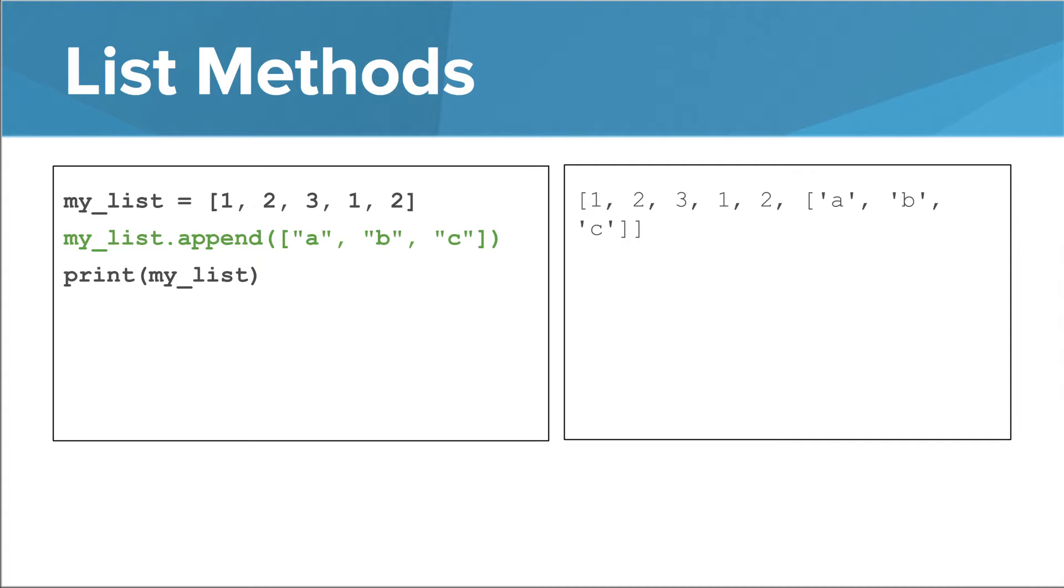It does append A, B, and C, but it appends them as a list. Now we have a list in our list, when what we want is just some numbers and some strings. This is what append does. It sticks whatever the argument is on the end of the list, even if that argument is, itself, a list.